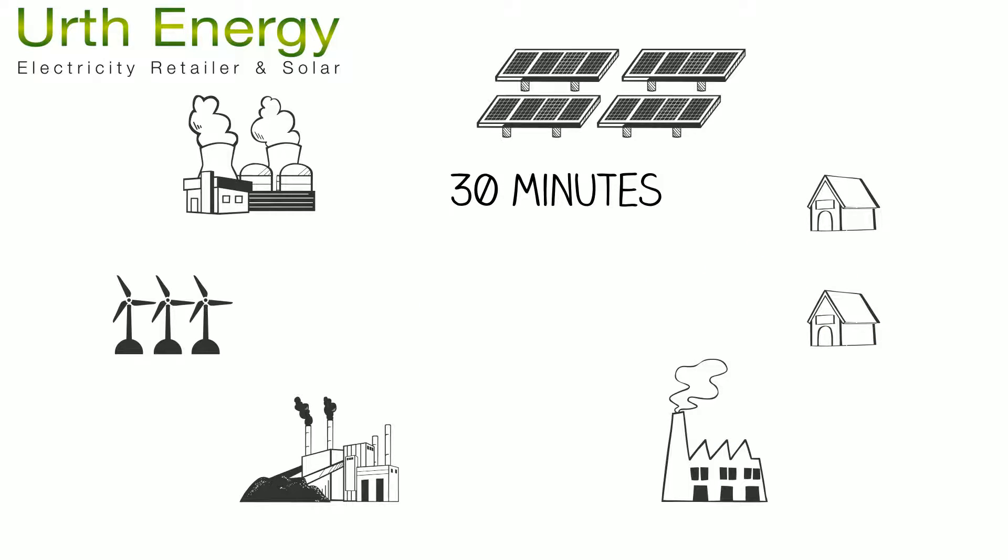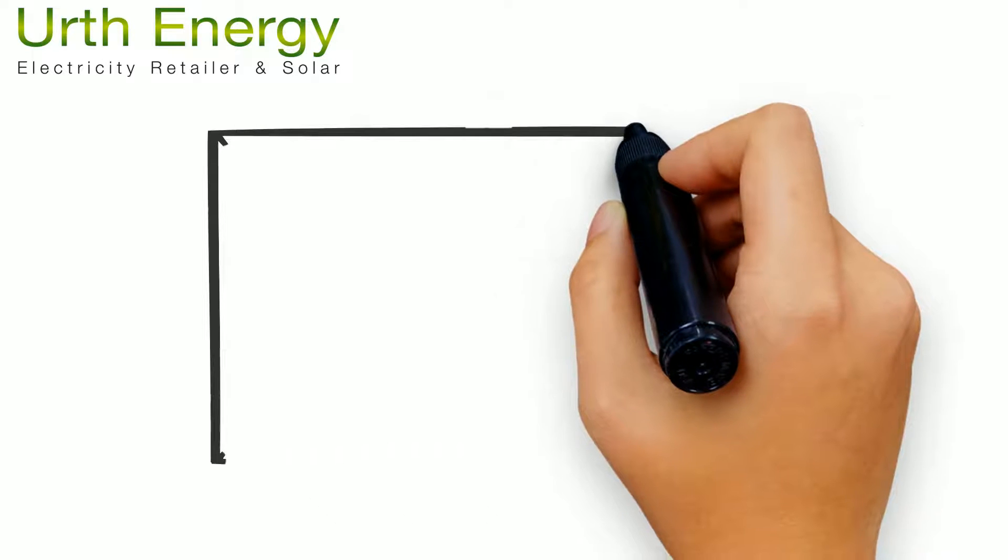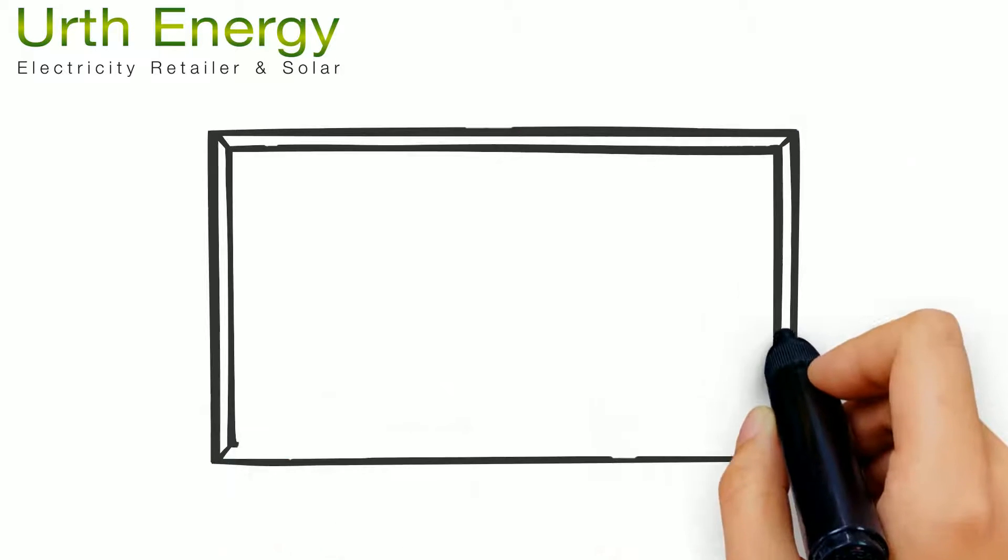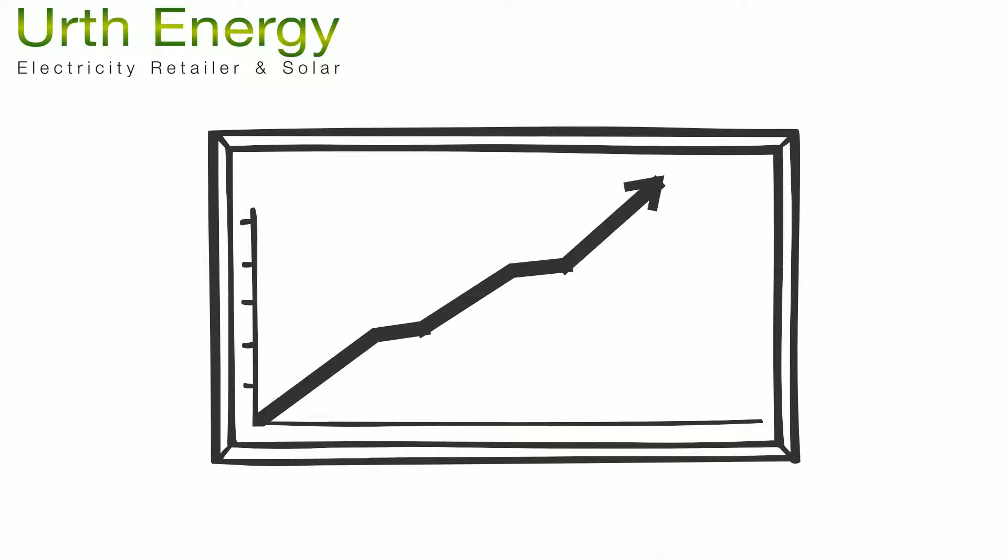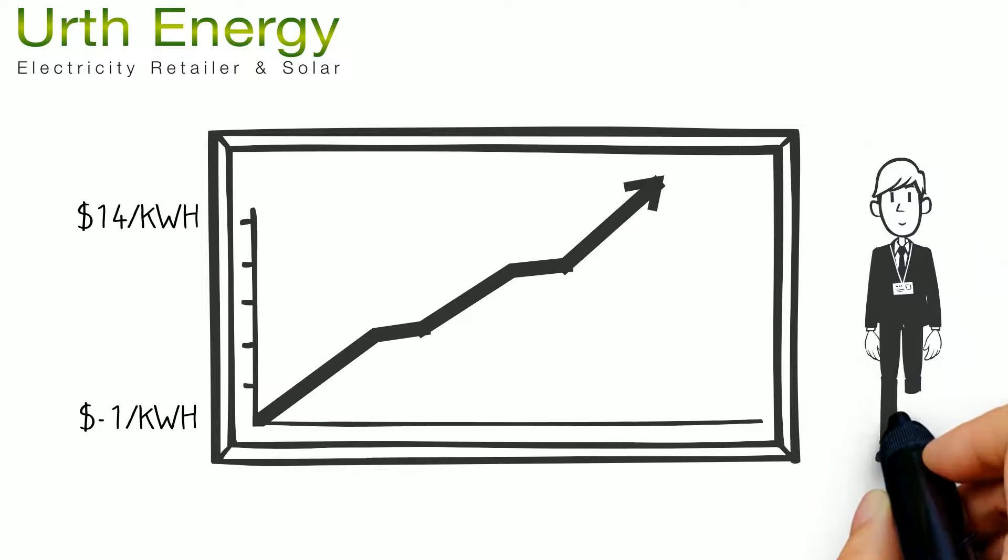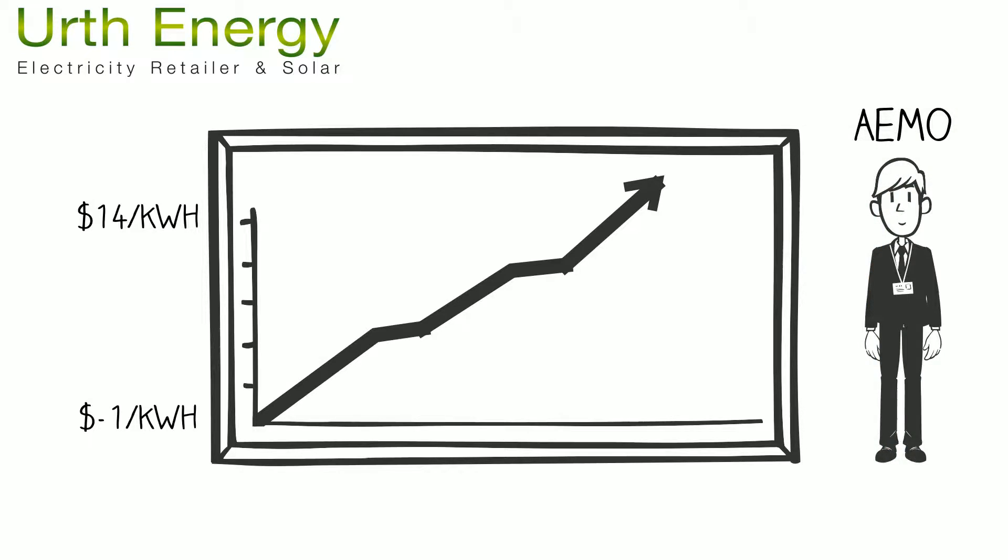The spot price is the price generators are paid for their electricity. Like many industries, supply and demand influences prices. Prices can rise to as high as $14 and to as low as minus $1 per kilowatt hour. These prices are regulated by the Australian energy market operator.